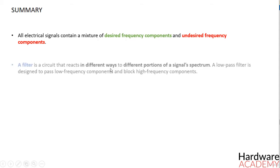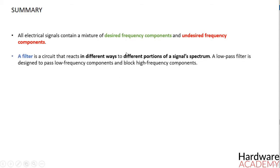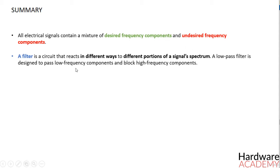A filter is a circuit that reacts in different ways to different portions of a signal spectrum. A low pass filter is designed to pass low frequency components and block high frequency components.